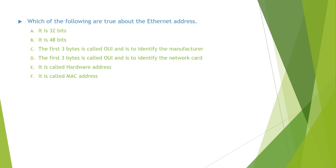Which of the following are true about the Ethernet address? Options include: it is 32 bits; it is 48 bits; the first three bytes is called OUI and is to identify the manufacturer; the first three bytes is called OUI and is to identify the network cost; it is called hardware address; it is called MAC address.